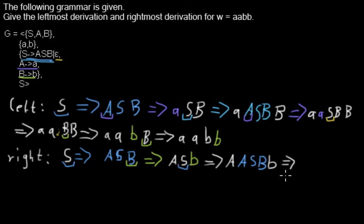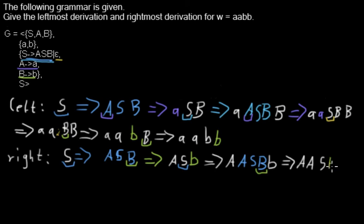I'm still doing rightmost derivation, so I will proceed with the b which is now rightmost in the string, and I will replace it with this rule by a terminal b. So I get a and S as they were left from before, I replace the non-terminal b by the terminal b, and I keep the b that was behind it.